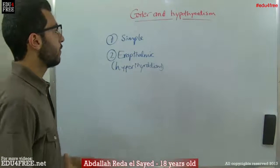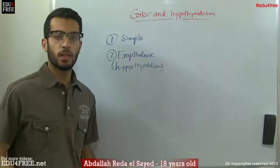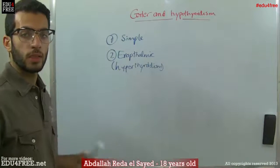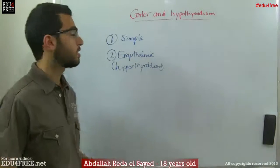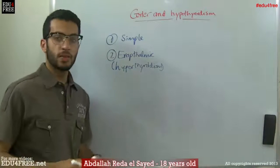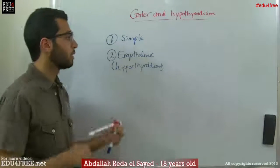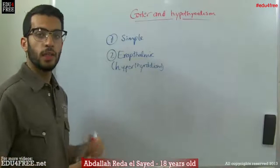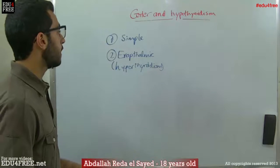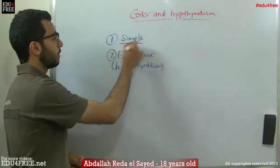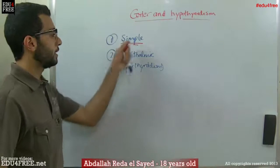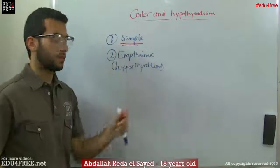As we mentioned before, the secretion of thyroxine depends mainly on the ratio of iodine in the human body. So if the iodine supply decreases due to deficiency in food, water, or air, this causes the Simple Goiter. This can be treated by iodine extracts and similar supplements.